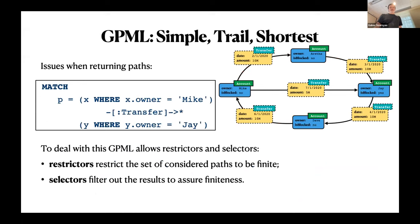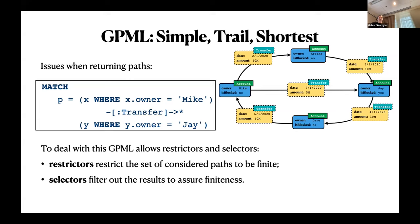The usual problem: if you have cycles, you'll have an infinite number of paths. The language allows you to output paths, so you can bind paths going by transfers from an account owned by Mike to an account owned by Jay, at arbitrary lengths. But because there's a cycle, you can keep cycling through the graph in various ways, so the number of paths is infinite. They must be restricted somehow. In GQL there are two mechanisms: restrictors and selectors.